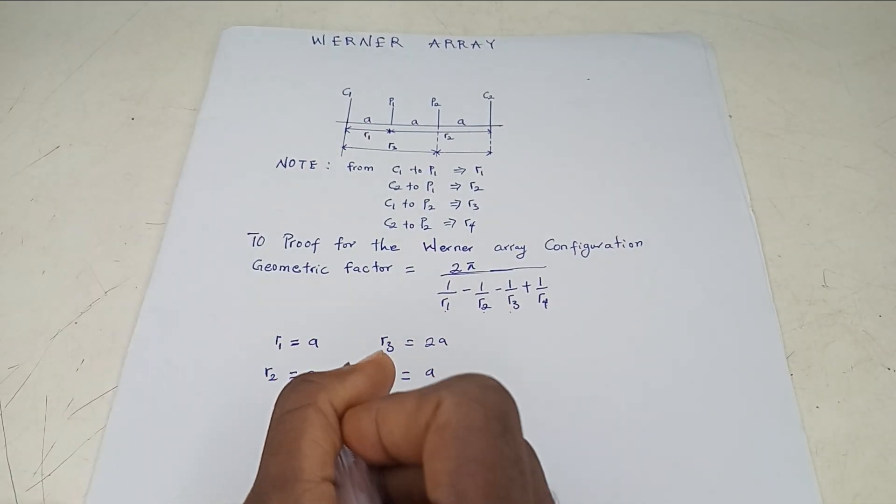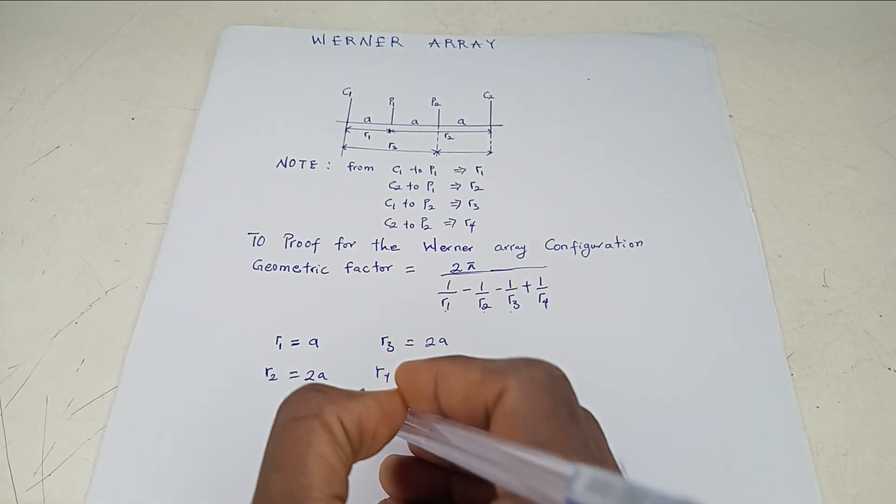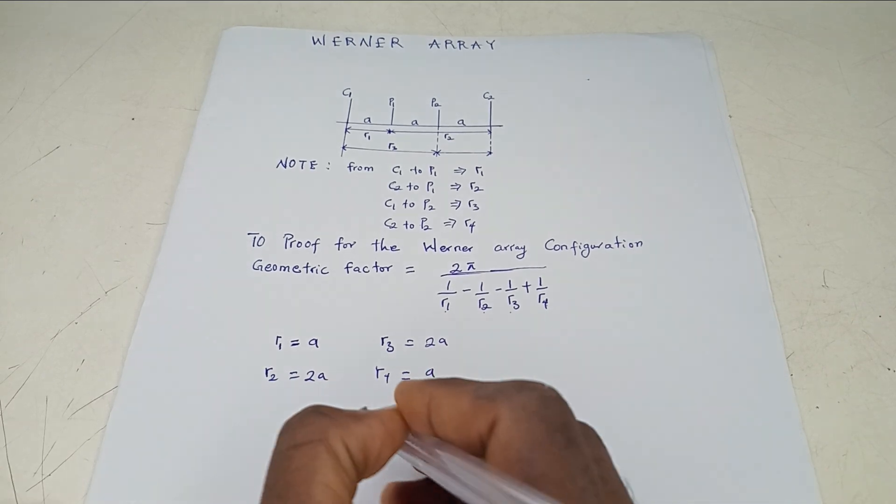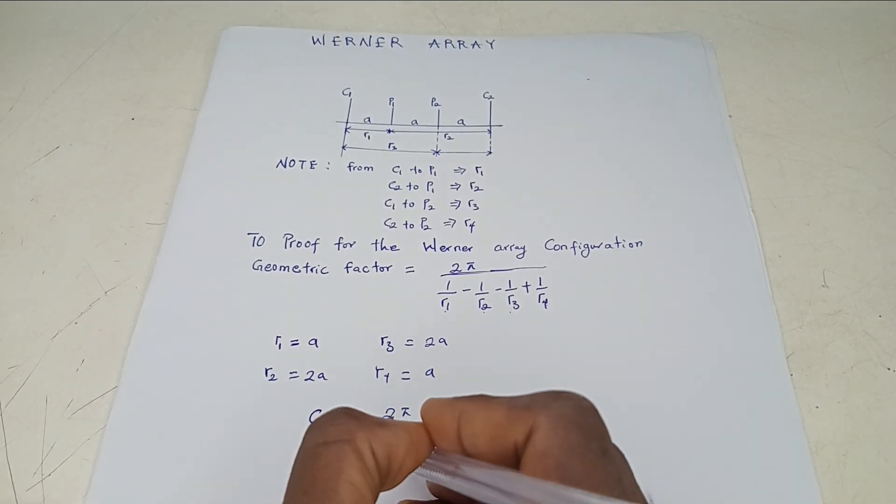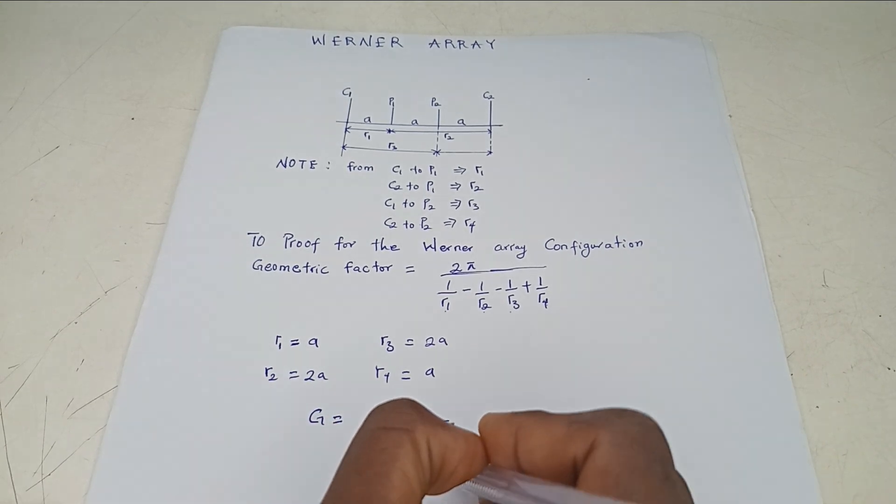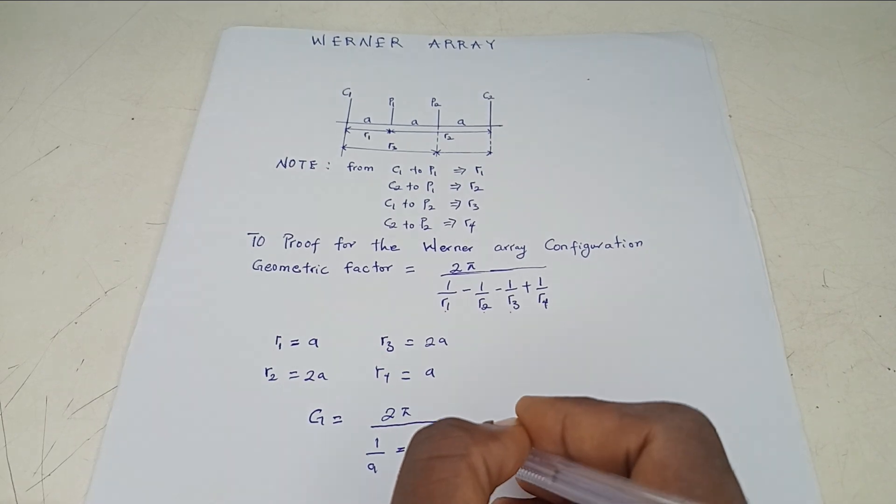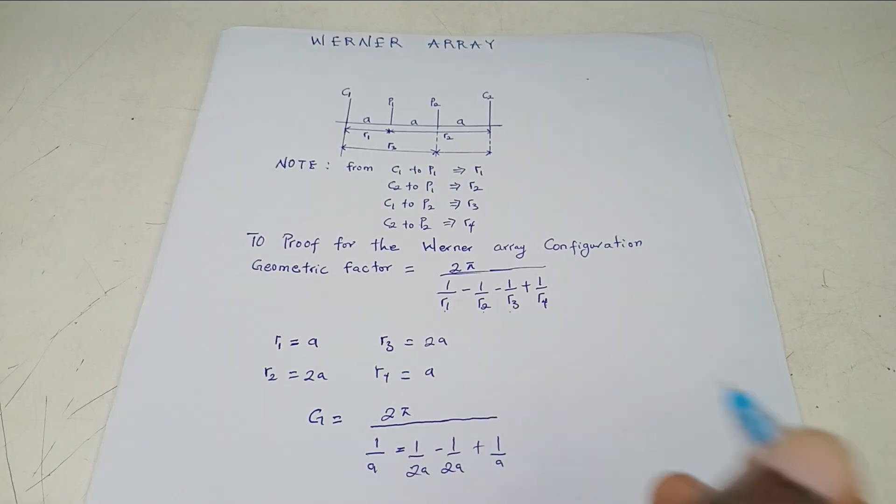Then you are now going to your geometric factor and substitute the value of R1, R2, R3, R4 that you have gotten from your array configuration. So 2π over 1 over A minus 1 over 2A minus 1 over 2A plus 1 over A. Good.